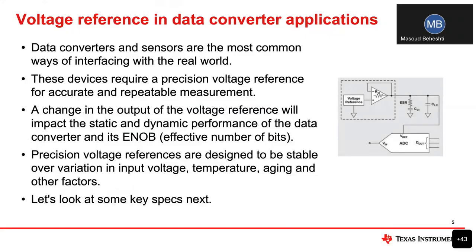As most of you already know, sensors and data converters are commonly used in a wide range of applications to convert analog signal to a digital stream. As you can see in this diagram, when you have a data converter, you typically have a precision external voltage reference that is used to make a repeatable and accurate measurement possible. These voltage references are designed to be very stable over any types of variation in terms of input voltage, operating temperature, aging of the system, humidity, and many other factors.